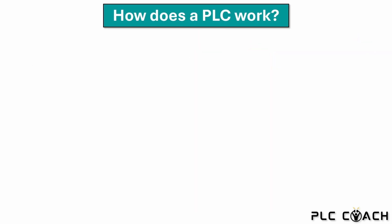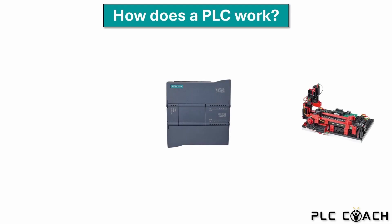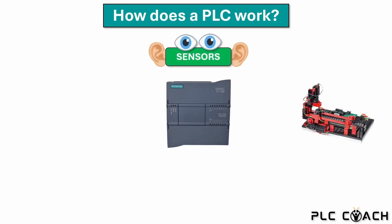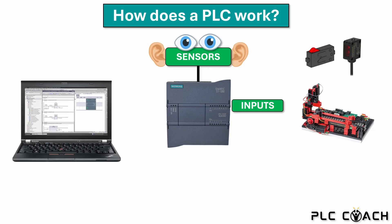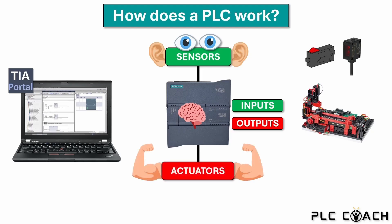Now let's recap what we have learned. The job of a PLC is to control machines. To do this the PLC requires sensors — the eyes and ears of a PLC — such as limit switches and light barriers. The sensors are wired to the inputs of the PLC and send data to it through the wire. Our PLC is a dumb device and does not know how to process the data from the sensors on its own. We first need to create a PLC program using TIA Portal. After we have uploaded the project to the controller, the PLC knows how to process the information from the sensors. Depending on the program we have created, the PLC controls the outputs, which are wired to the actuators of the machine — for example, a motor.